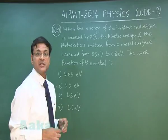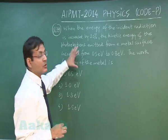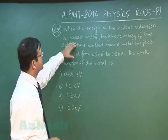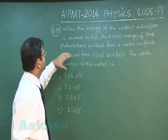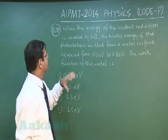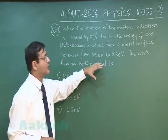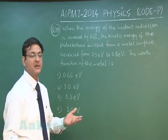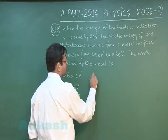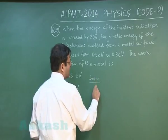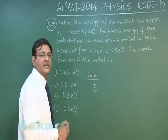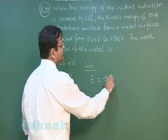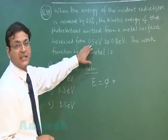Question 39 is based on the photoelectric effect. When the energy of the incident radiation is increased by 20 percent, the kinetic energy of the photoelectrons emitted from a metal surface increases from 0.5 eV to 0.8 eV. You have to find the work function of the metal using Einstein's photoelectric expression: E = work function + kinetic energy.